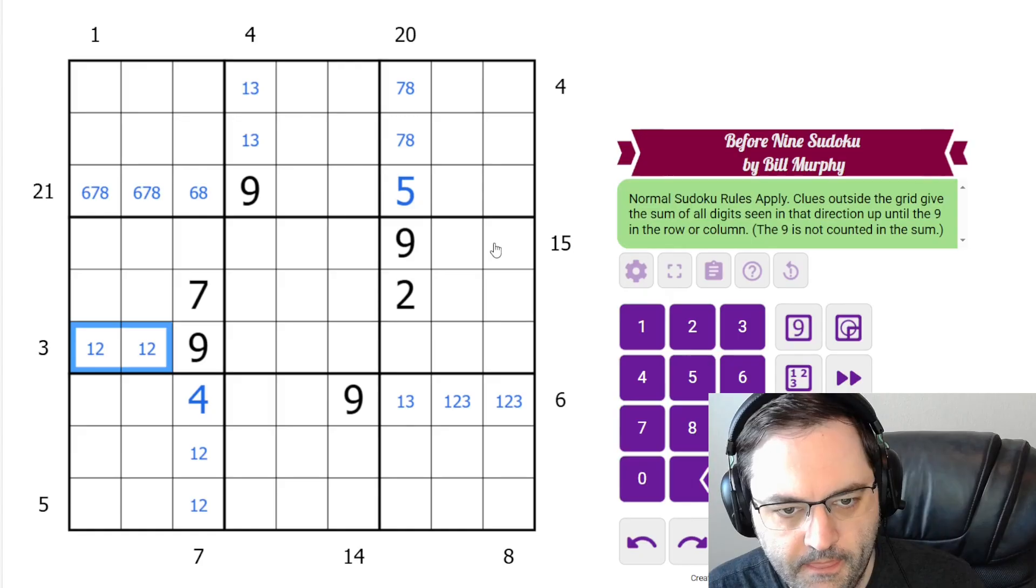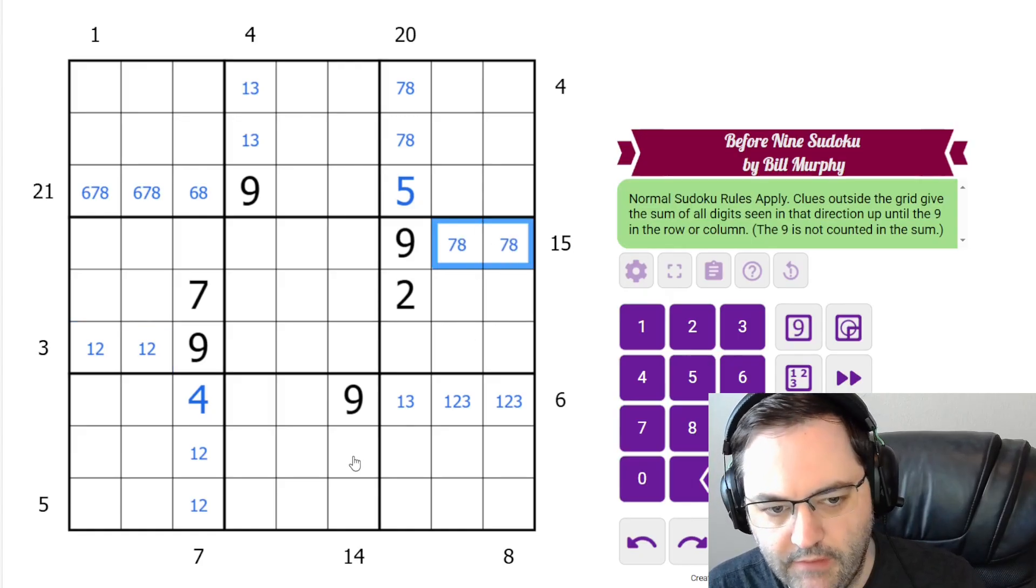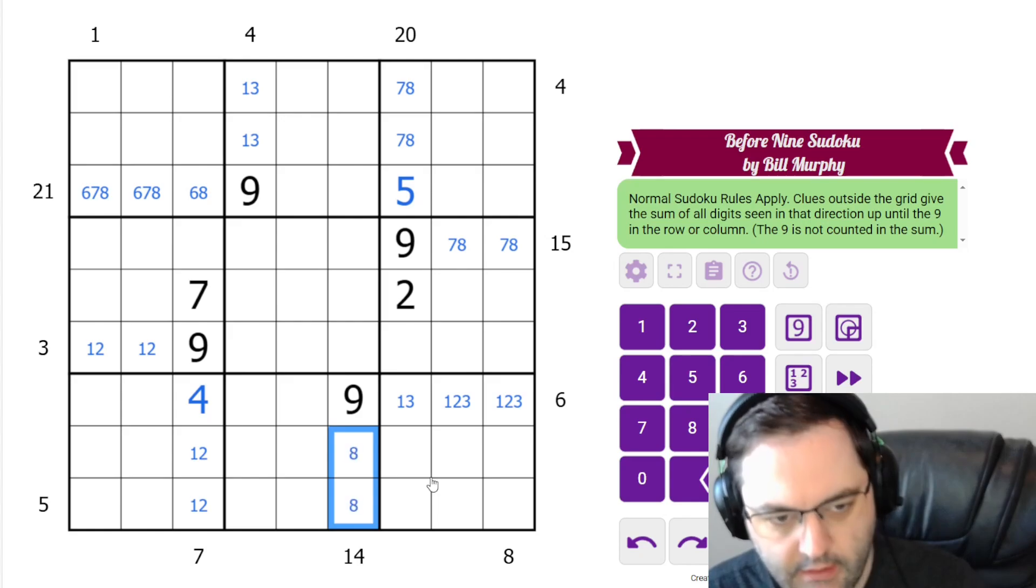3 is 1, 2. 15 without a 9 must be 7, 8, and 14 without a 9 must be 6, 8.